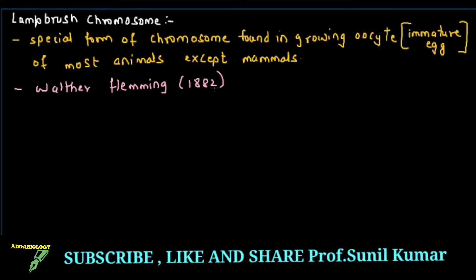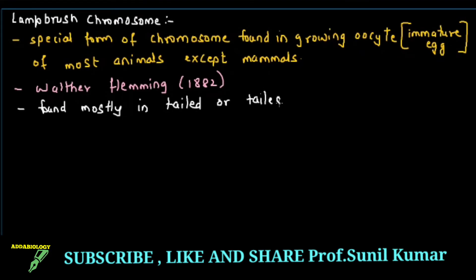The lampbrush chromosome is found mostly in tailed or tailless amphibians. It is also found in birds and in insects. These are the different animals where you can find the lampbrush chromosome.